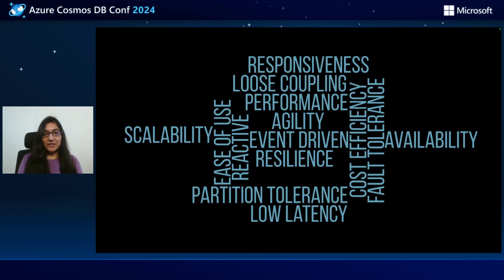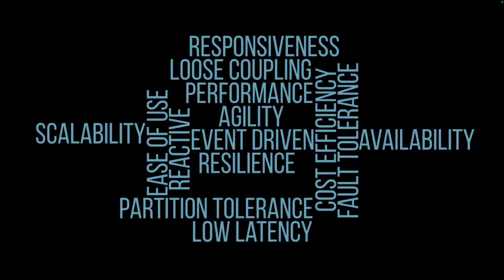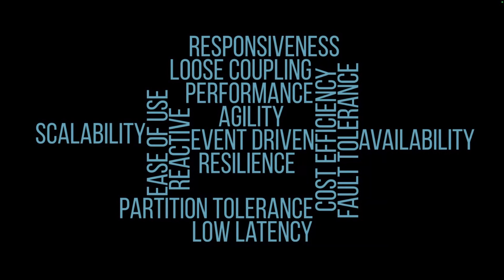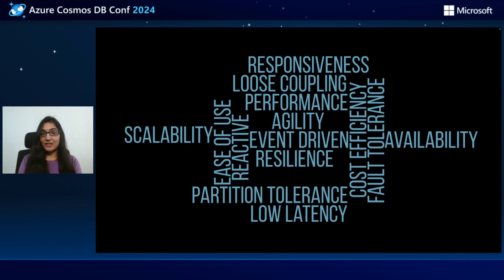Whenever you talk about building distributed systems, there are different quality attributes that we commonly try to achieve in modern software architecture design. We want it to be cloud native, we want to build reactive systems, it should be scalable, high-performing, should have high availability, low latency, loose coupling, agility, and cost-efficient. But ultimately, we want to build these resilient systems that can withstand surges, failures, and attacks without compromising on data integrity. But getting these quality attributes in your application is not an easy job. There are challenges.